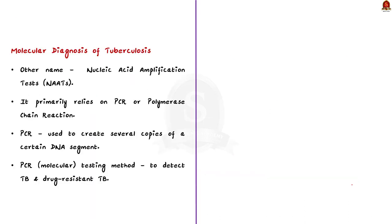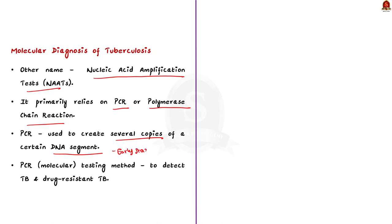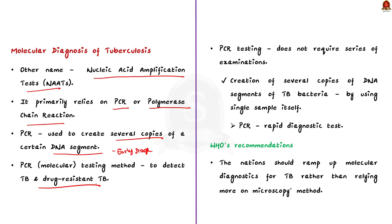The molecular diagnosis of tuberculosis uses nucleic acid amplification tests (NAAT), which primarily rely on PCR — polymerase chain reaction. PCR is a technique used to create several copies of a DNA segment quickly and accurately. Using PCR, TB can be diagnosed at an early stage and drug-resistant TB can also be detected. From a single sample, several copies of TB bacteria DNA segments can be created, and the test is faster than conventional microscopy, which is why it is called a rapid diagnostic test.